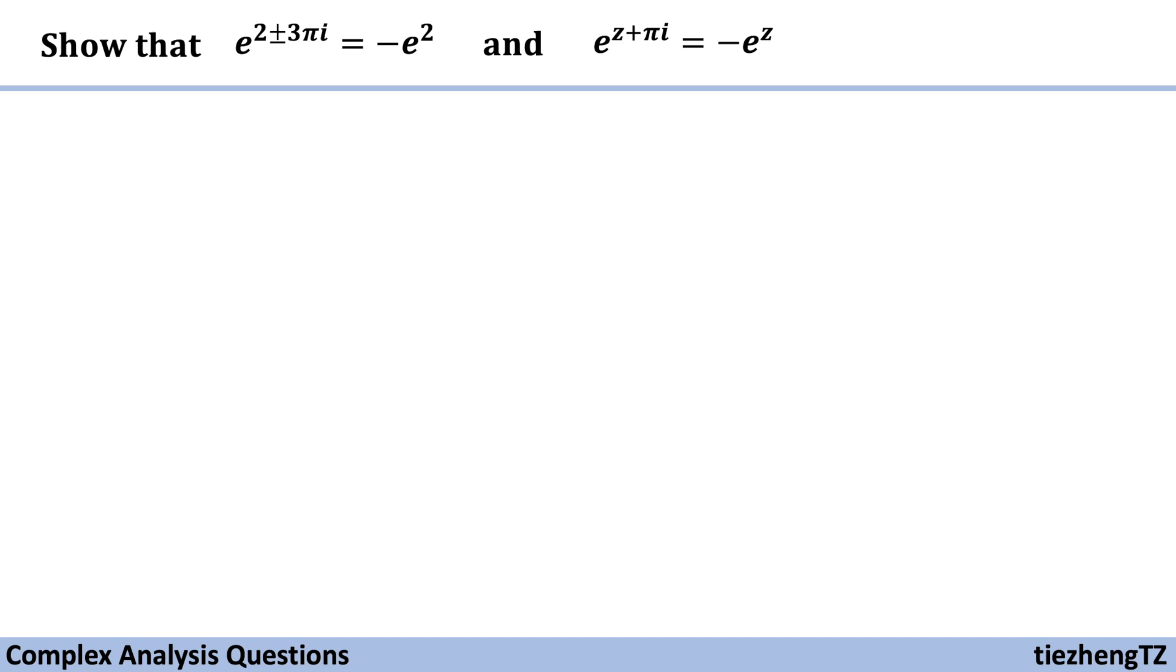So first we know this is the exponential question. For the first one, we can change e to the power of 2 plus minus 3 pi i to e square times e to the power of plus minus 3 pi i.